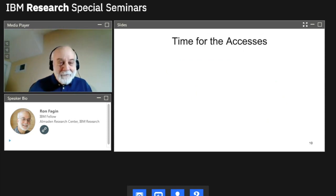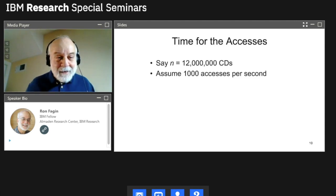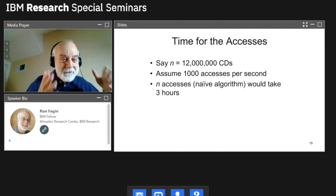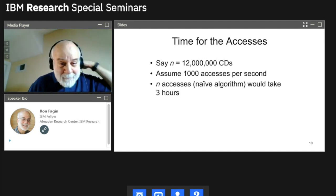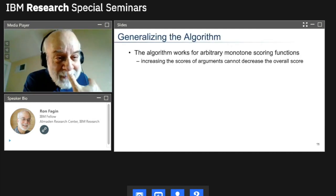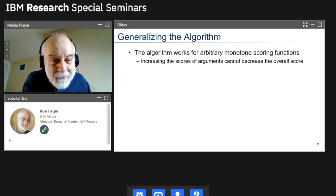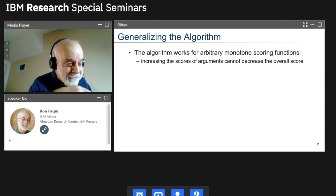Now, let's just see the difference between N and square root of N. Time for the accesses. Let's go back to MusicBrains with this 12 million CDs. So now, if you assume 1,000 accesses per second, N, you know, searching every item of the N items of the database would take, in the naive algorithm, would take about three hours. Square root of N, about three seconds. So it's a huge win to do square root of N versus N. So generalizing the algorithm, well, you know, we theoreticians like to generalize things. So the algorithm would work not just for min or anything like that, but any monotone scoring function, one where if you increase the scores, you can't decrease the overall answer.